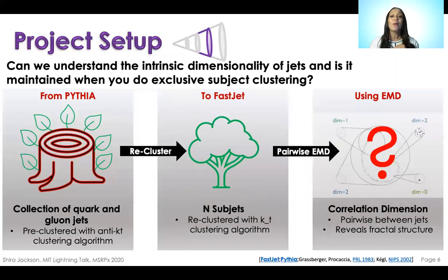Then we calculate the EMD on all events and we compute something called the correlation dimension. And we want to know is that dimensionality preserved when we do this exclusive subjet clustering.